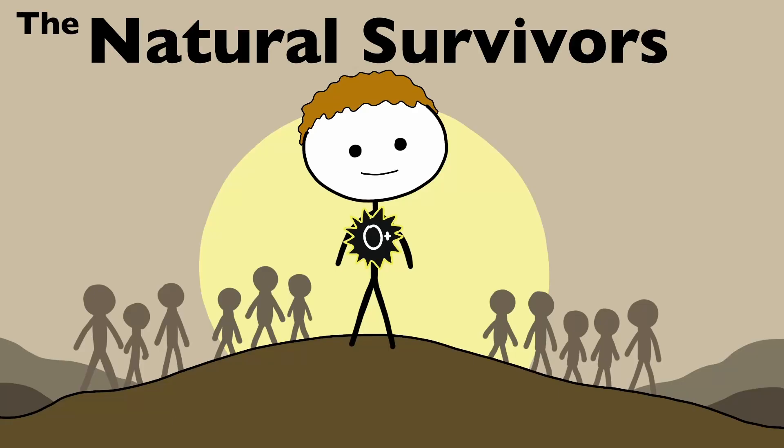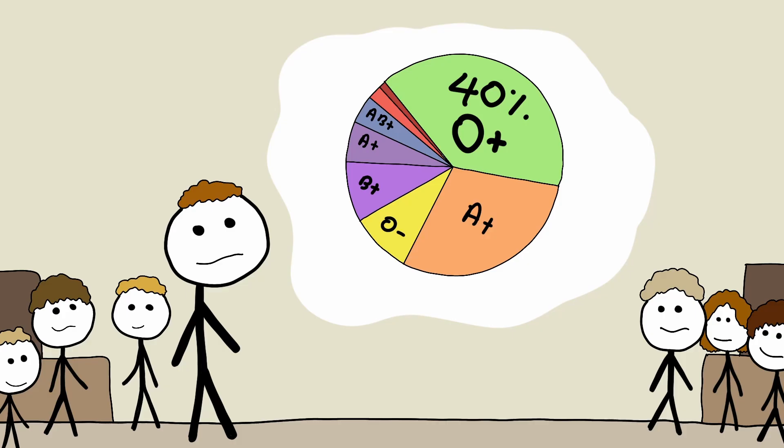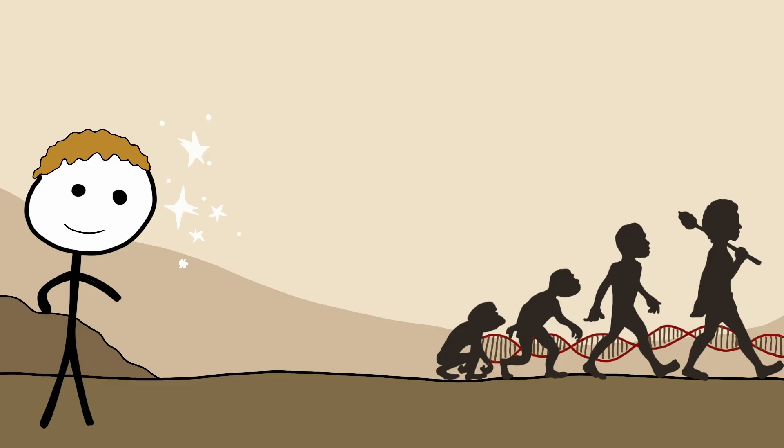O-positive, the natural survivors. If you have O-positive blood, you're part of the world's largest blood group, nearly 40% of the population, yet your biology carries some of the most powerful survival traits in human evolution.